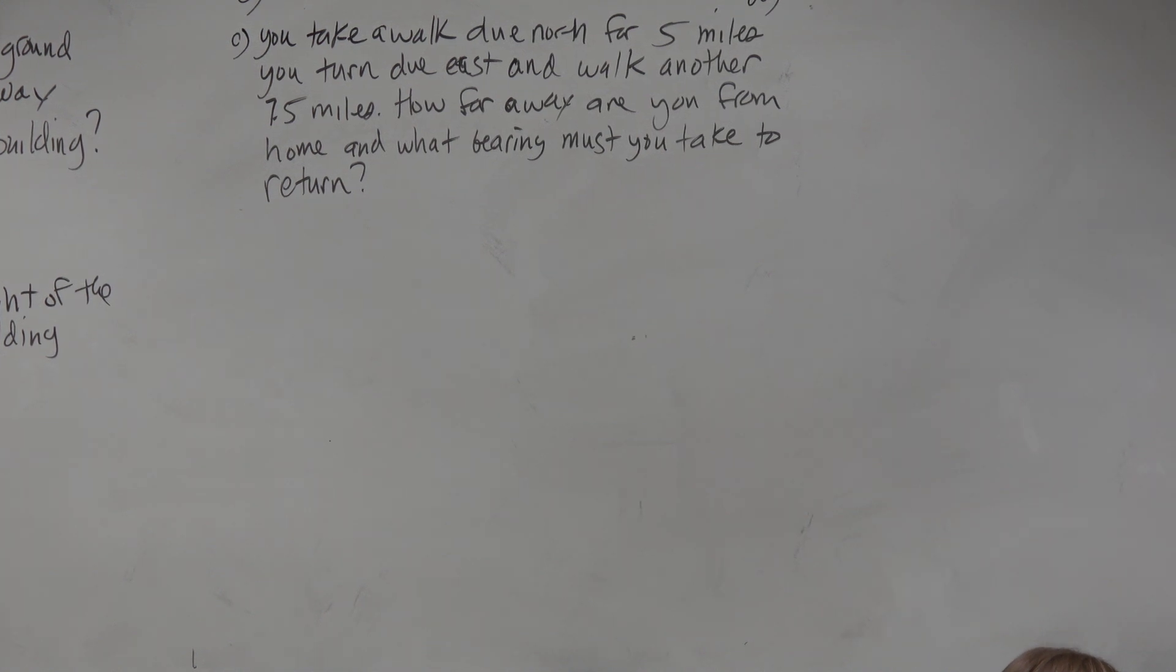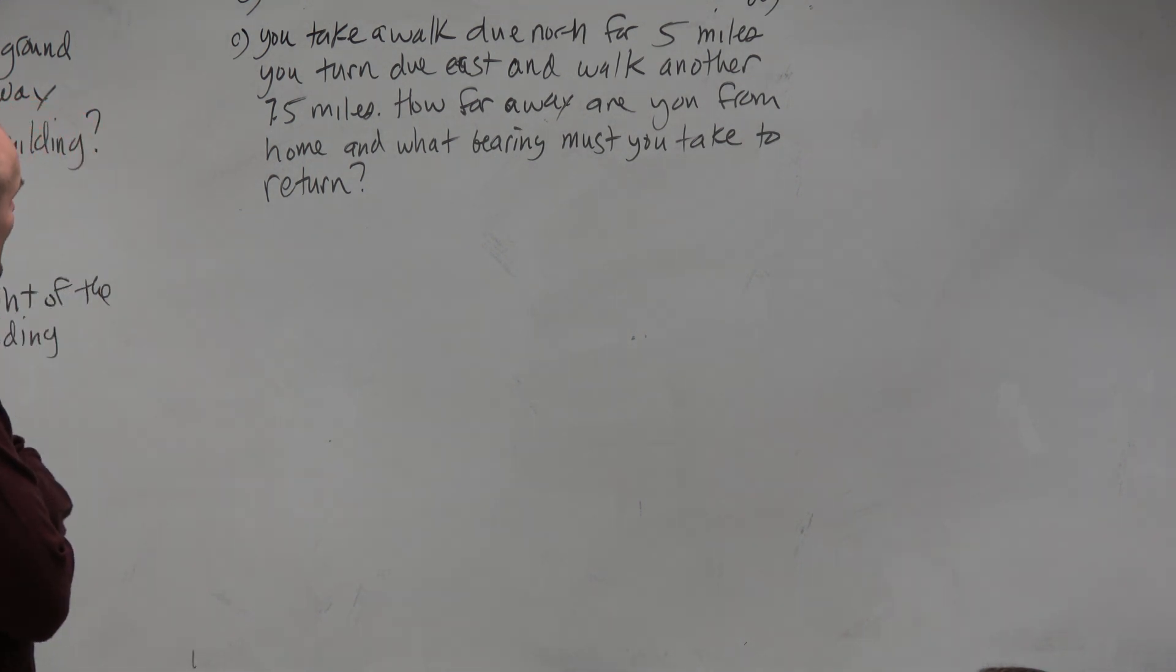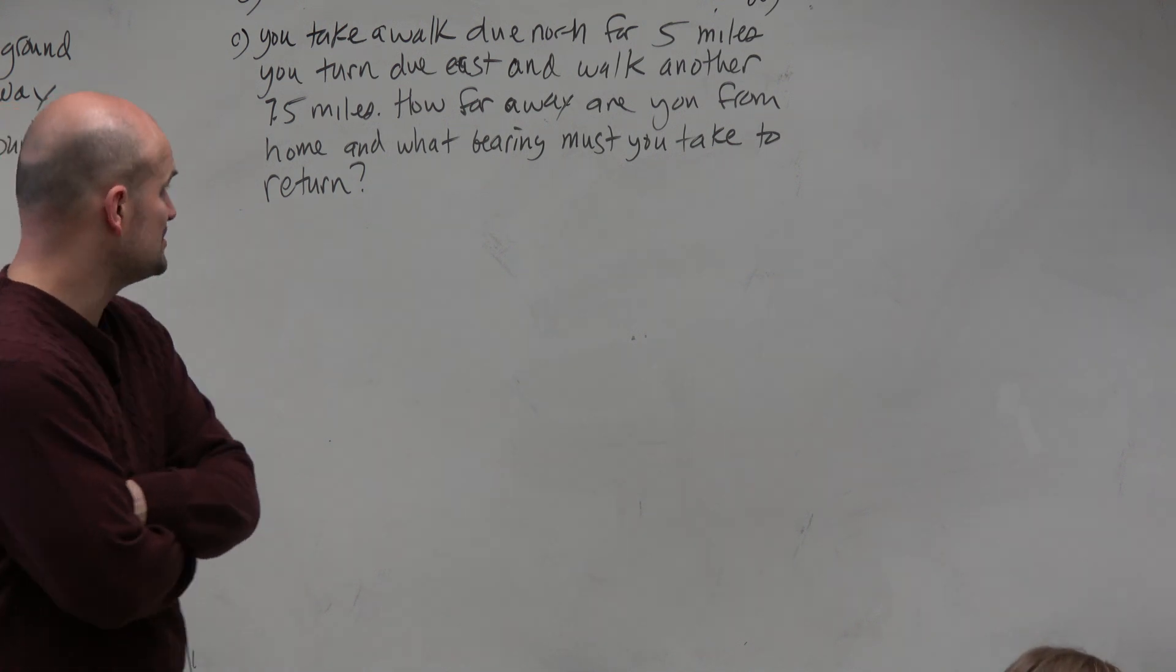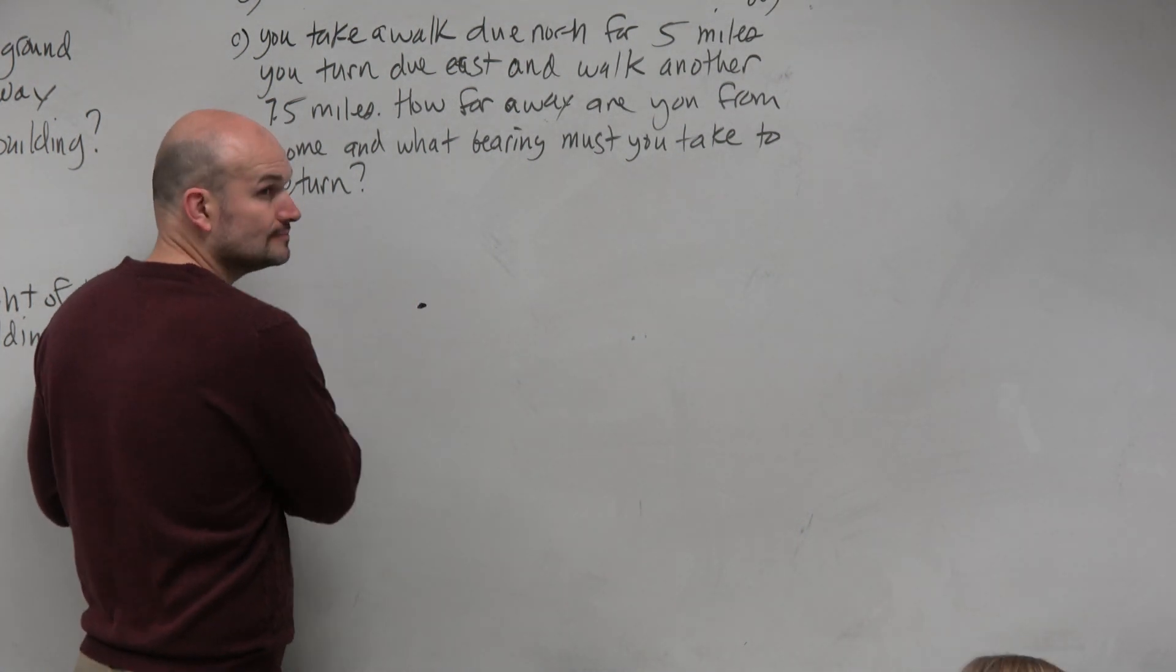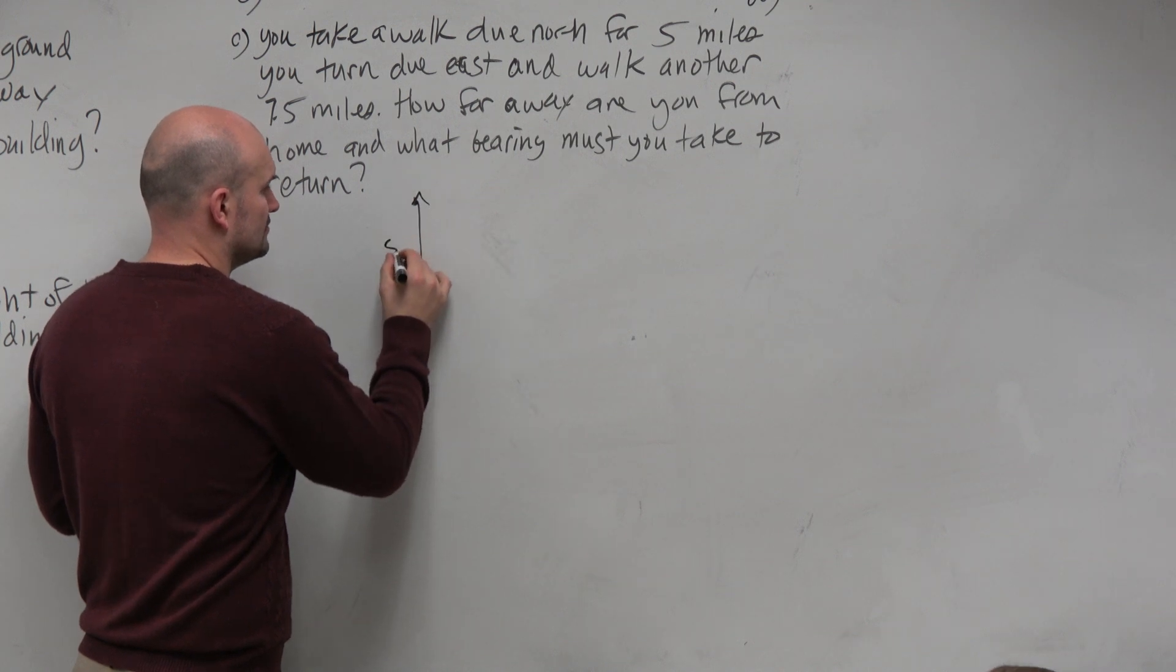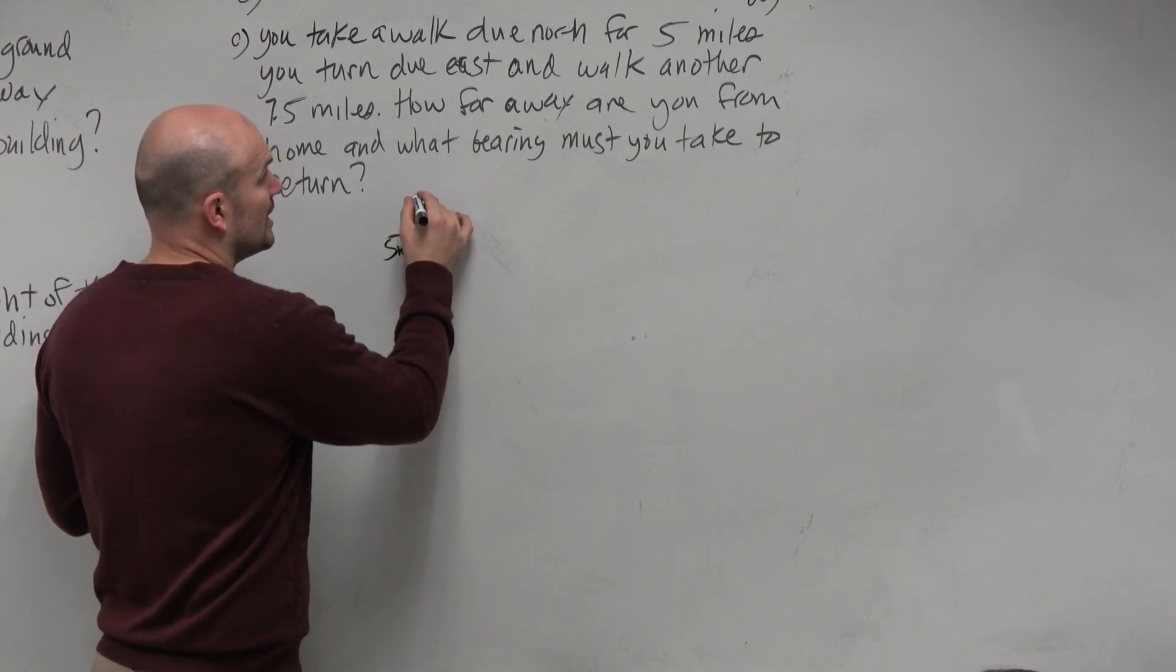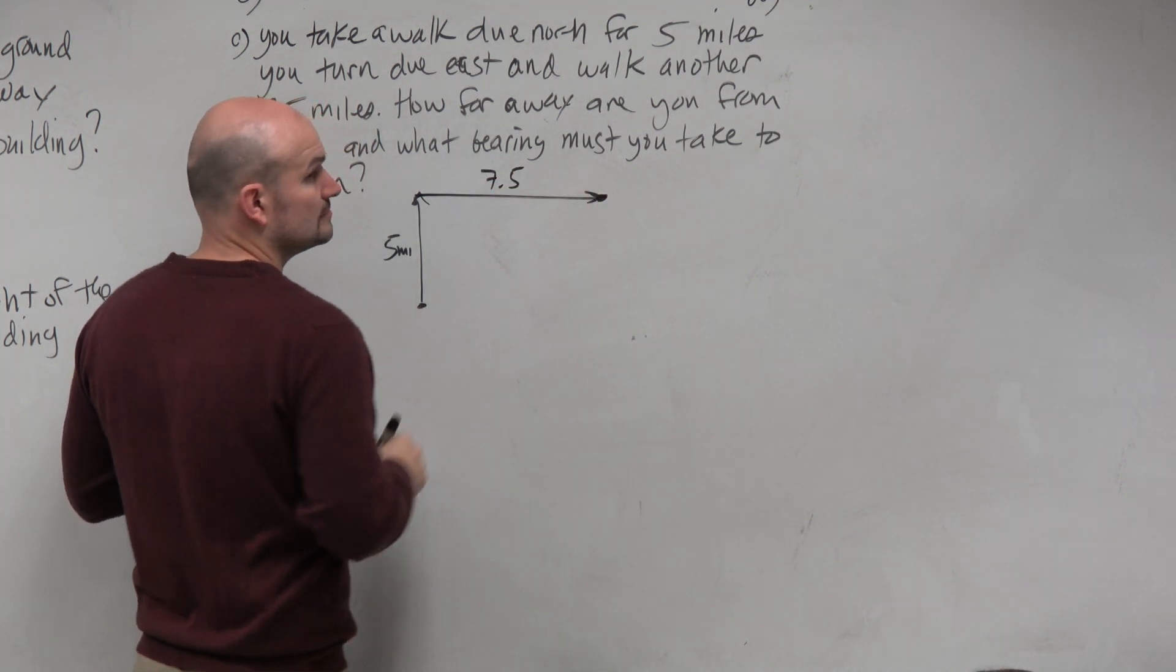Next problem. It says you take a walk due north for 5 miles. Then you turn due east and walk another 7.5 miles. How far away are you from home and at what bearing must you take to return? So again, here you are. You walk due north for 5 miles, then you turn and go due east for 7.5 miles.